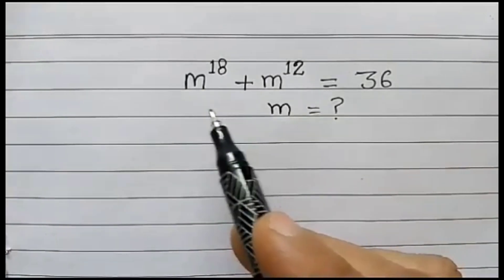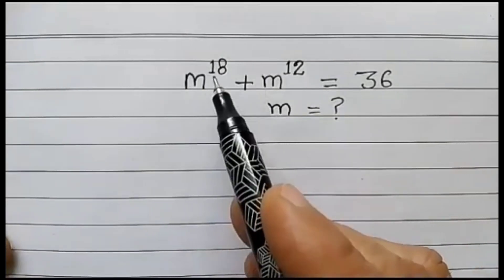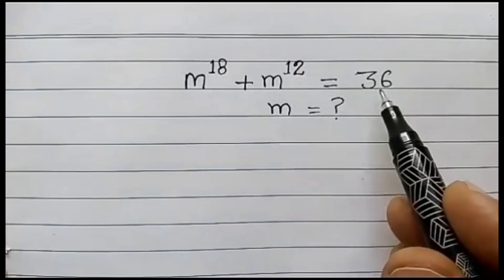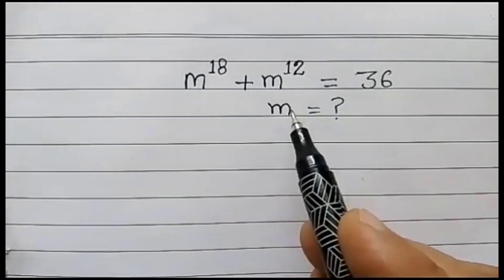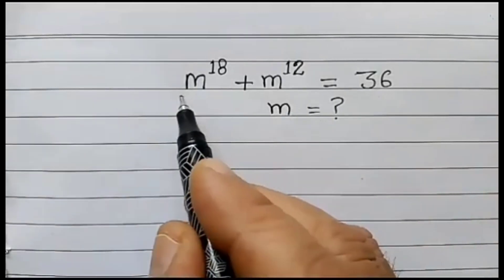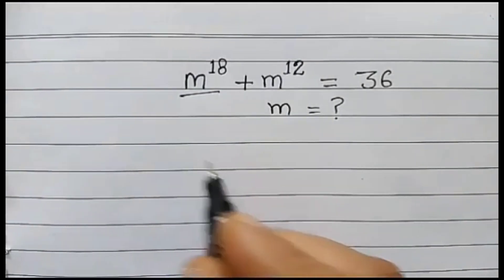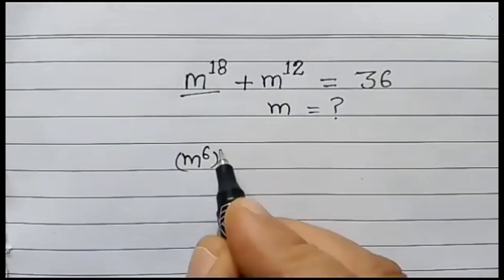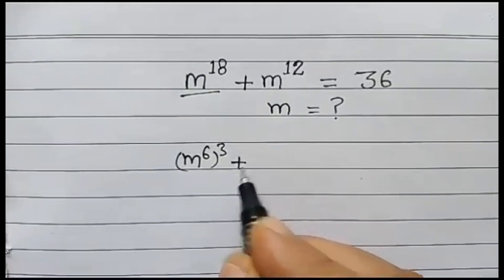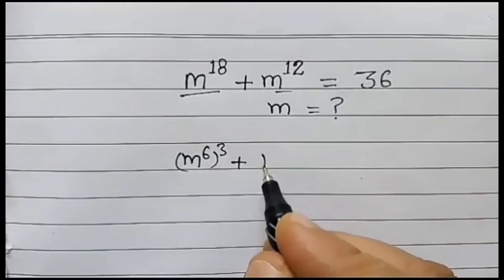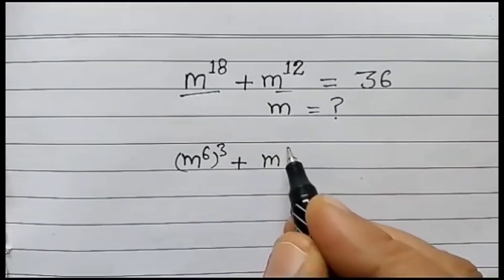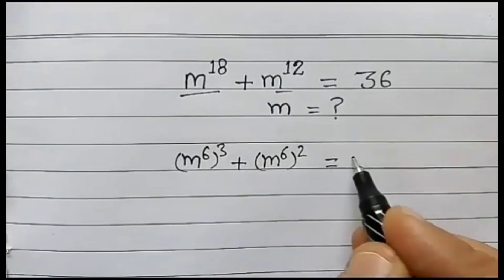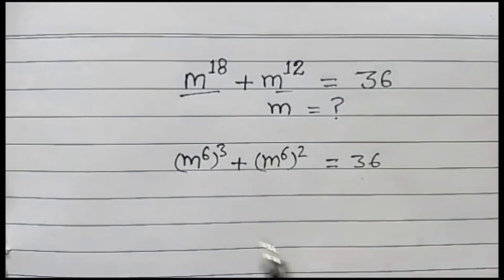Hi friends, today we have an awesome equation: m to the power 18 plus m to the power 12 is equal to 36. We have to solve this equation. So let's start. m to the power 18 can be written as m to the power 6 cubed, plus m to the power 6 squared, is equal to 36.